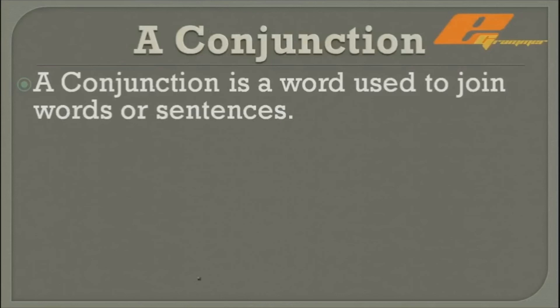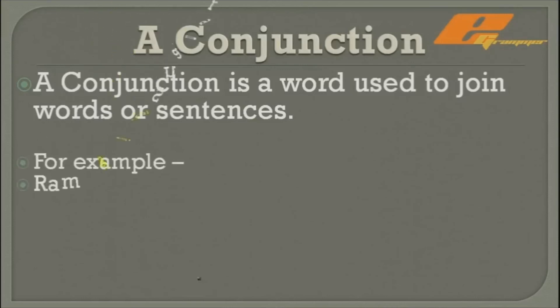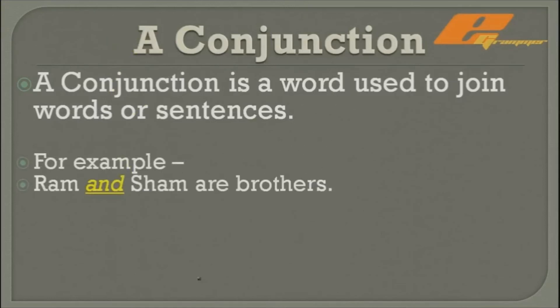A conjunction is a word used to join words or sentences. When we combine two words or two sentences, the particular word we use to connect them is a conjunction. For example: 'Ram and Shyam are brothers' — 'and' joins the two names together. Without it, saying 'Ram, Shyam are brothers' wouldn't sound natural. Another example: 'Give me pen or pencil' — 'or' joins two nouns.